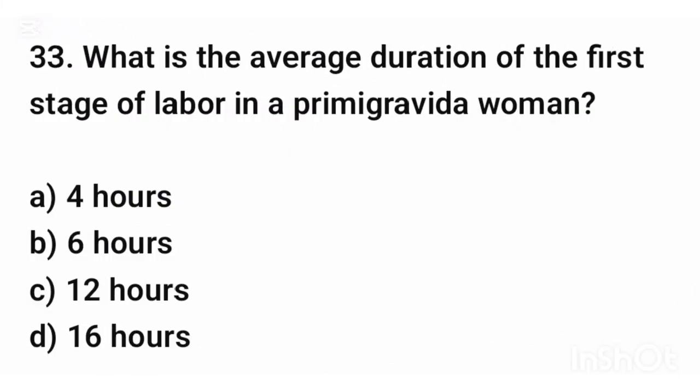Question number thirty-three. What is the average duration of the first stage of labor in a primigravida woman? The correct answer is option C: 12 hours.